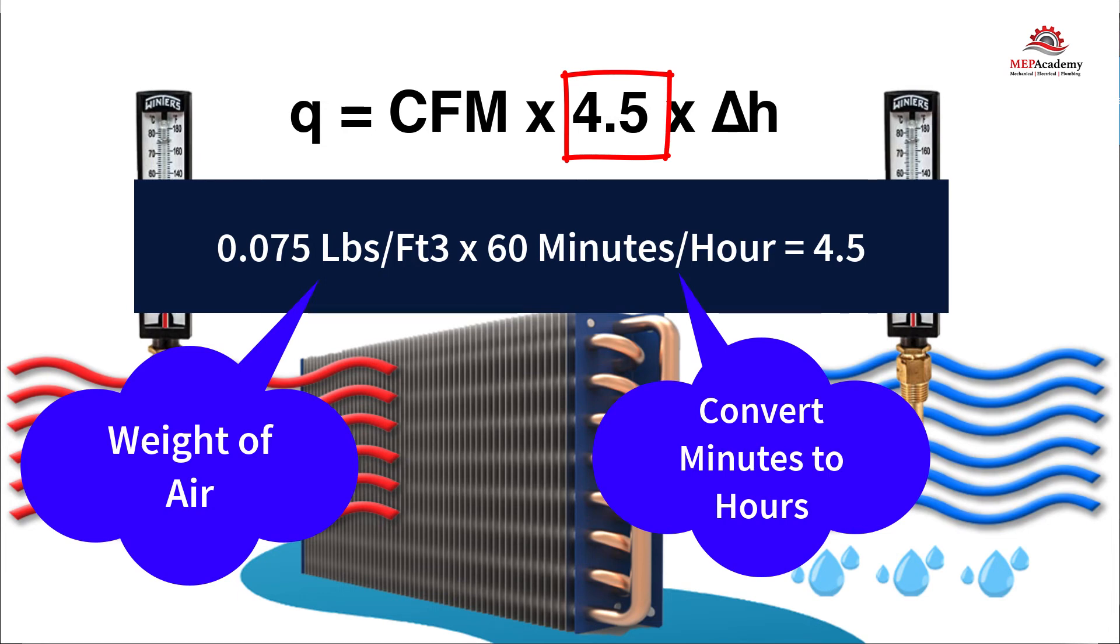This is what that looks like: 0.075 pounds per cubic foot times 60 minutes per hour equals 4.5.